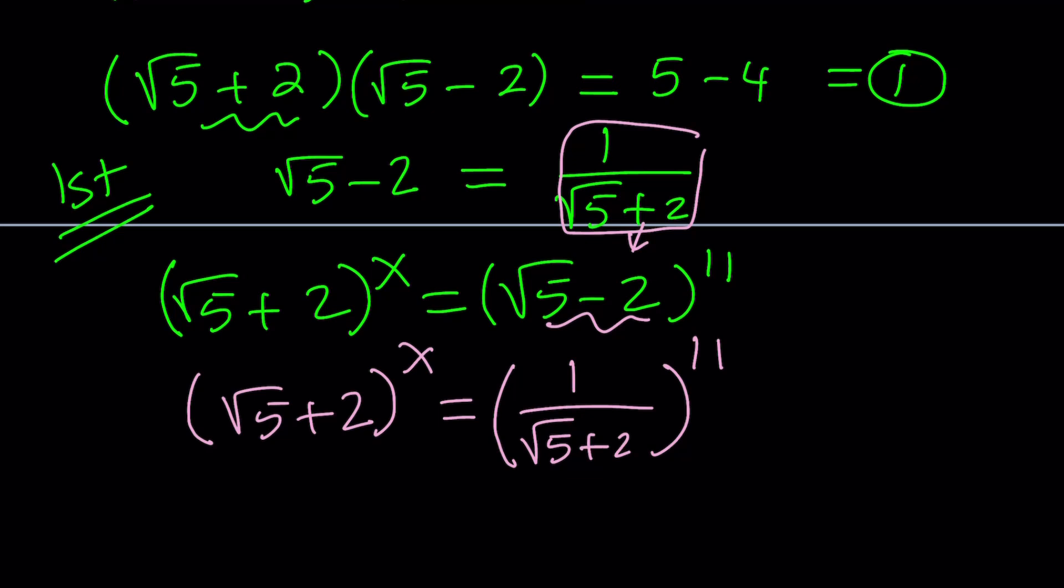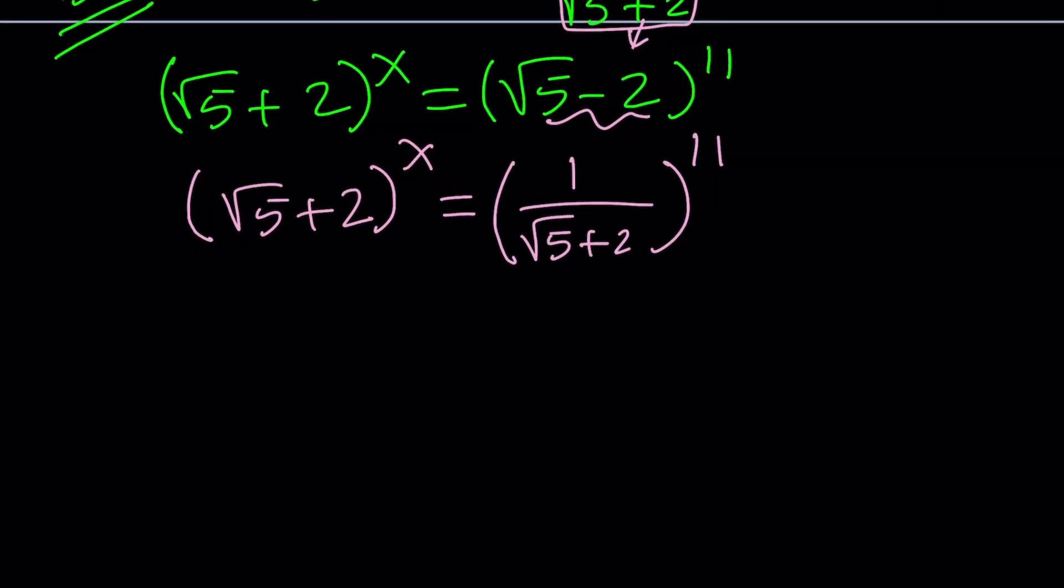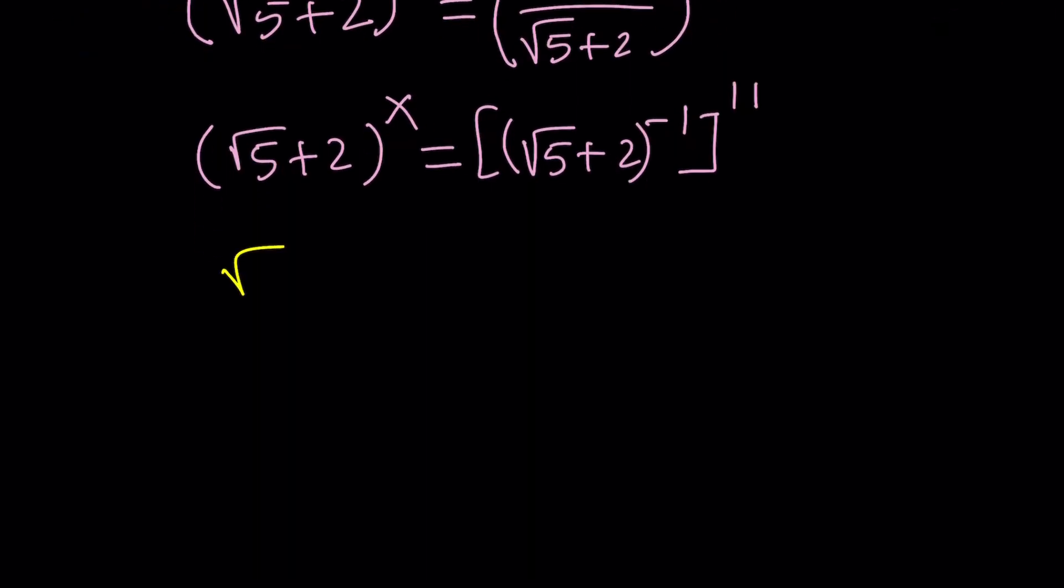So far, so good. We're getting closer to the answer. Now, notice that 1 over something is the reciprocal, so we can use a negative exponent to express that. 1 over root 5 plus 2 or in general, 1 over a is a to the power of negative 1. So we can replace 1 over root 5 plus 2 with root 5 plus 2 to the power of negative 1. And then, of course, we need to raise it to another power, which is the 11th power. And now, this is where things get pretty interesting and nice. Now, we have two exponents, so we're going to multiply them. Root 5 plus 2 to the power of x and root 5 plus 2 to the power of negative 1 times 11 is negative 11. This is where things get nicer because now you have the same base. And we kind of owe it to the fact that these two are reciprocals.